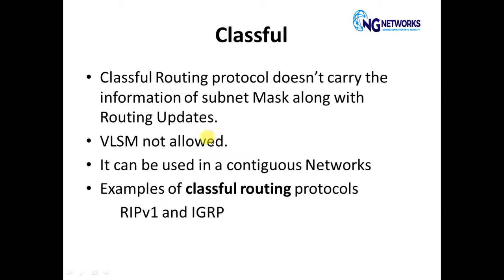That is why classful routing protocols do not support the VLSM concept — Variable Length Subnet Mask — and they can only be used in contiguous networks. Using classful routing protocols in a discontinuous network can cause problems. Examples of classful routing protocols are RIP version 1 and IGRP, which is not used anymore.